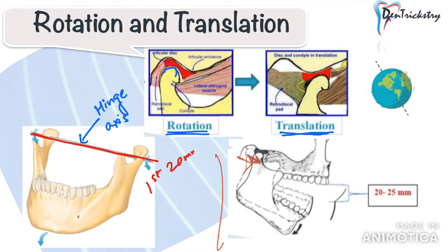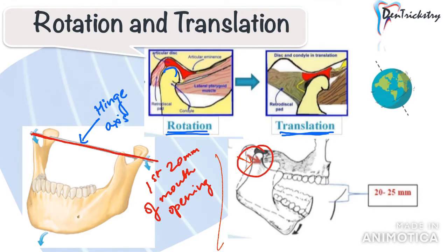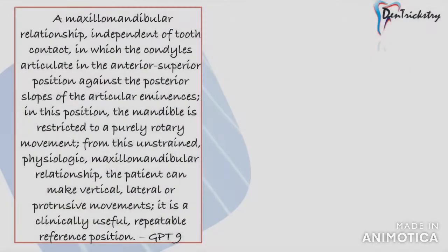Beyond that, if you want to open your mouth wider, the condyle has to slide out of the socket forwards and downwards along the articular eminence. This movement is called translation. Moving forward, we have the terms unstrained and physiologic.